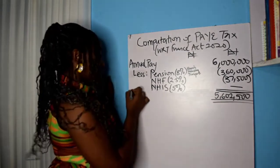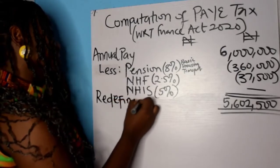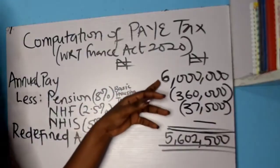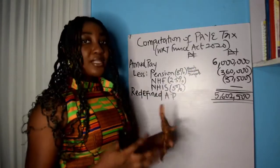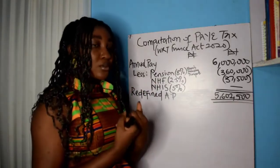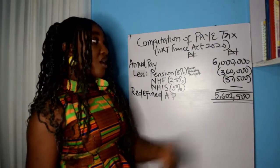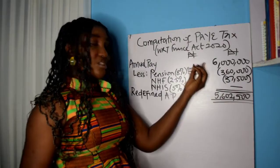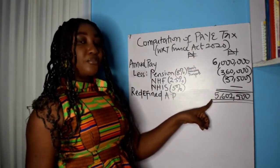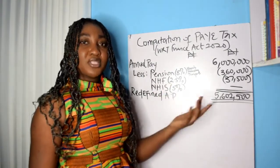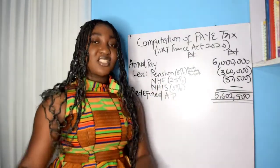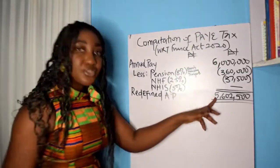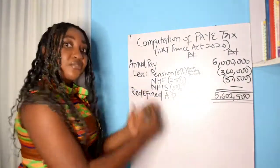This redefined amount — ₦5,602,500 — is the amendment. The government is saying: we are not going to compute your relief based on the full ₦6 million. We want to first reduce it to ₦5,602,500 by removing the portion of your salary that is not being taxed anyway. Then we will compute your relief based on this reduced amount. Think of it like your boyfriend giving you 10% of his salary, but now his salary is being reduced first — so the 10% you receive is also reduced. That is essentially what is happening with the Finance Act amendment.